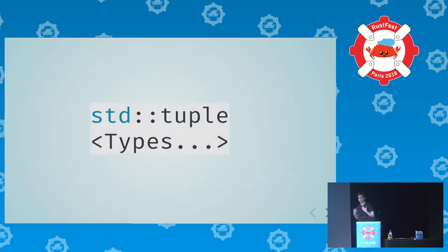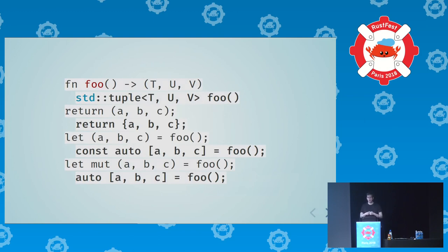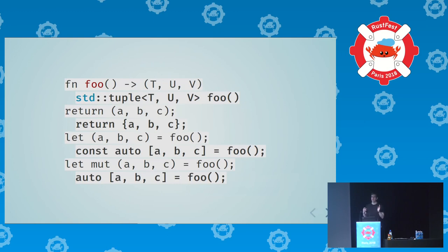In Rust we often like to return multiple values as tuples, and in C++ we have std::tuple. In both languages we can declare methods that return a tuple of some types, take some values and return them as a tuple, and destructure a return tuple into a bunch of variables. As usual in Rust, if we want mutability we say 'mut'; if we don't want mutability in C++ we say 'const' — again, the same thing.